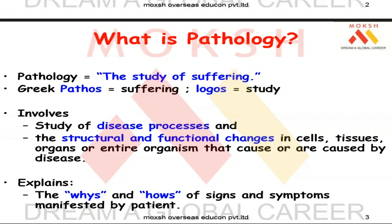You can have human pathology, animal pathology, or plant pathology, but in medicine we concentrate on the study of human suffering. It involves the study of disease processes and the structural and functional changes in cells, tissues, and organs caused by or causing disease. A human being is nothing but a conglomeration of specialized cells doing specialized functions — we cannot see with the nose or smell with the eyes, so we are all specialized.